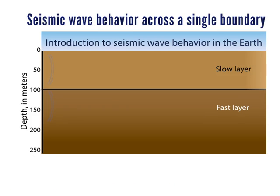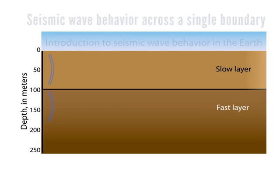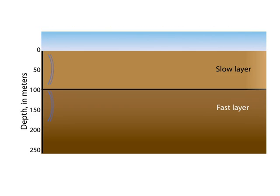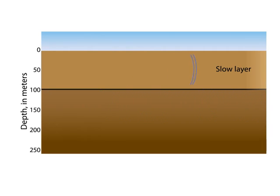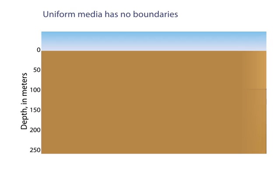Seismic waves travel at different speeds through different materials. In this two-layer model, two wave fronts leave an impact at the same time, but the lower layer is faster. When an explosion or impact occurs at or near the surface, waves travel away in all directions.